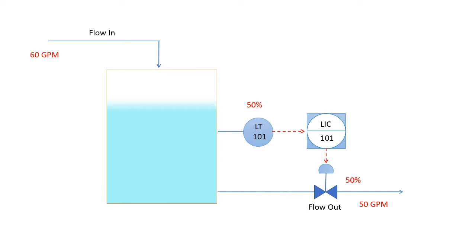Now suppose for any disturbance, the flow inlet got changed to 60 GPM. Now our outlet flow is still 50 GPM so level is set to raise.